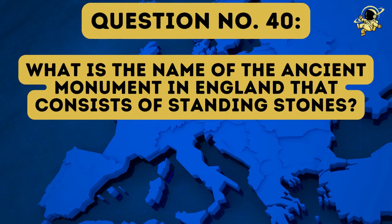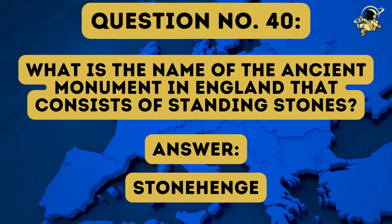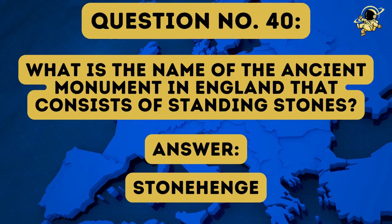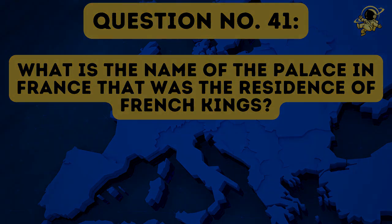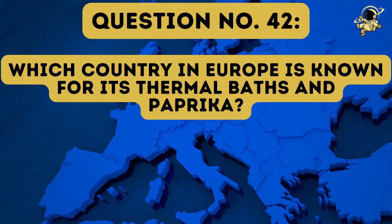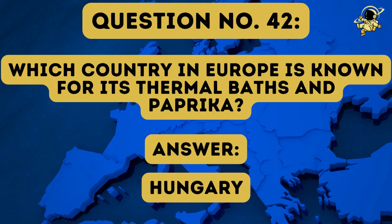And then we have question number forty: What is the name of the ancient monument in England that consists of standing stones? The answer to question number forty is of course Stonehenge. Question number forty-one: What is the name of the palace in France that was the residence of French kings? And the answer to question number forty-one is the Palace of Versailles. Question number forty-two: Which country in Europe is known for its thermal baths and paprika? It is Hungary.